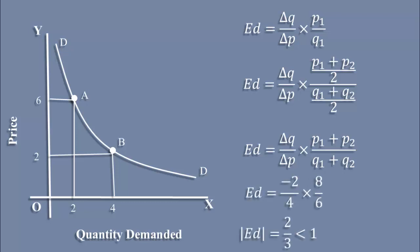Using this formula, we get the elasticity value as 2 by 3. Whether you move down or up along the same demand curve, you will get the same elasticity. According to arc elasticity method, in the range AB, demand is relatively inelastic.